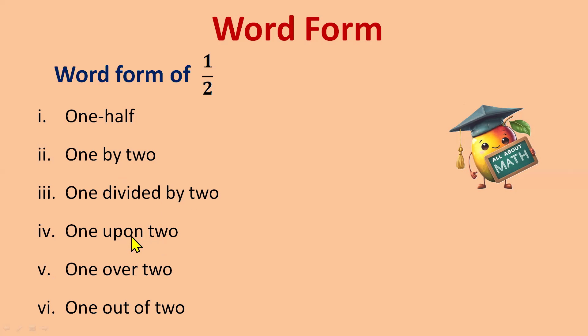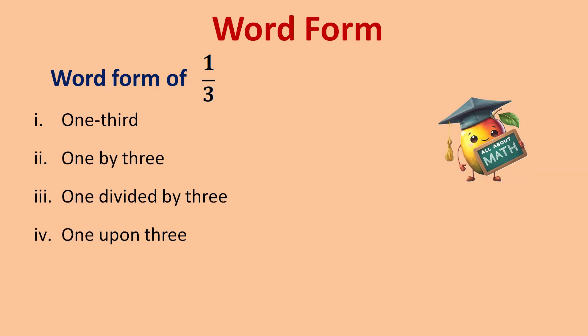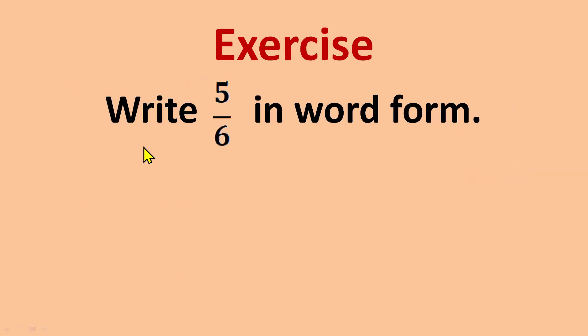Let's see another example: one by three. For three we use the same approach, but the ordinal number is 'third'. This time we will not be writing 'thirds' because one is in the numerator, so we write 'one third', not 'thirds'. So: one third, one by three, one divided by three, one upon three, one over three, and one out of three. You can choose any one way to write or read the fraction.